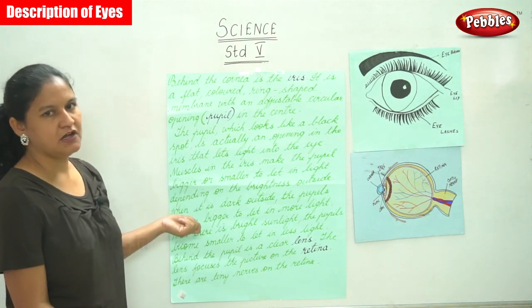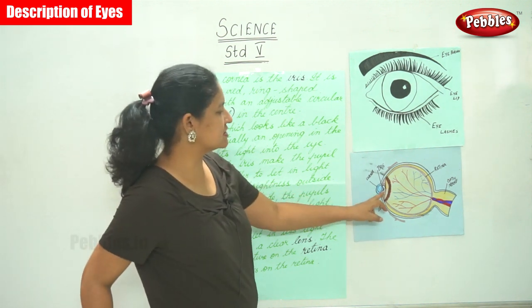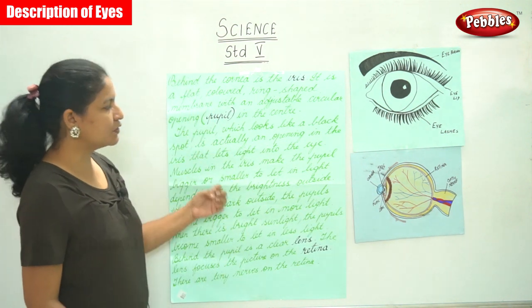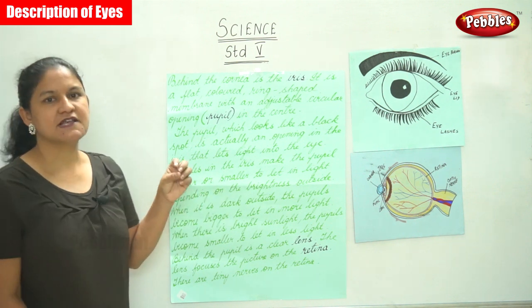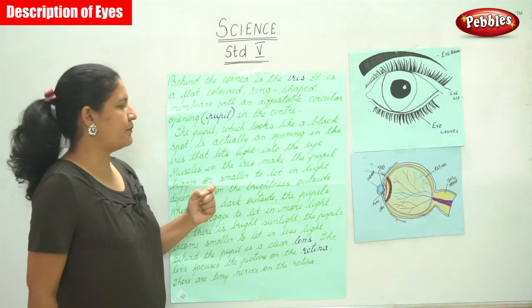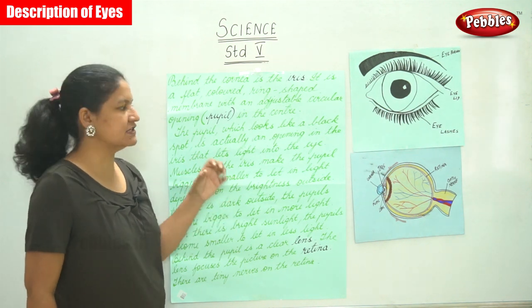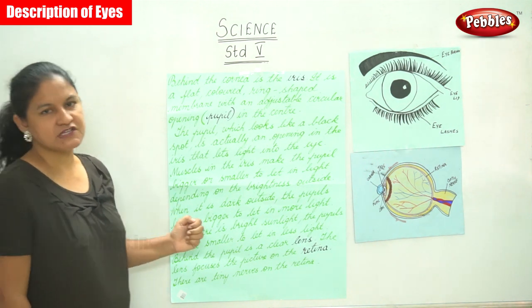The pupil is in the center of the iris. The pupil looks like a black spot but is actually an opening in the iris that lets light into the eye. The muscles in the iris make the pupil bigger or smaller to let in light depending on the brightness outside.